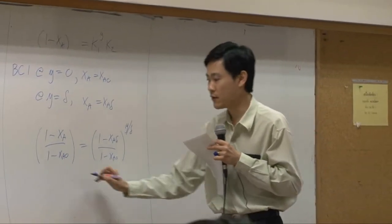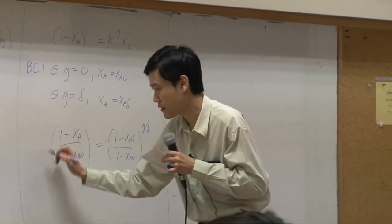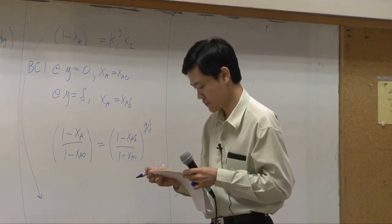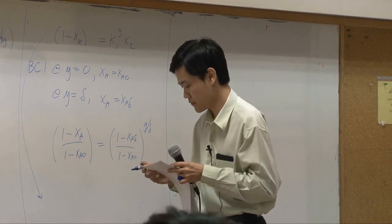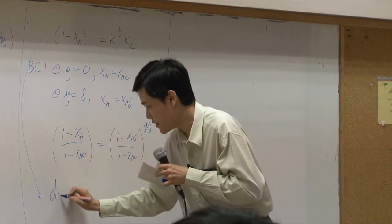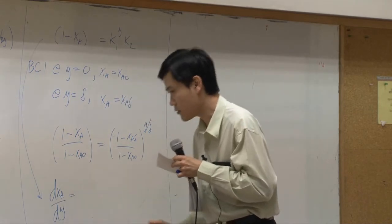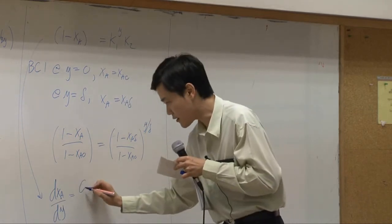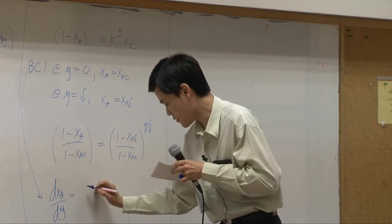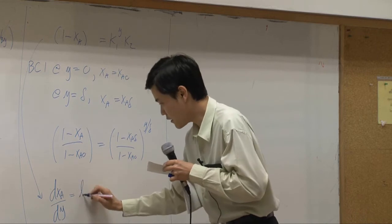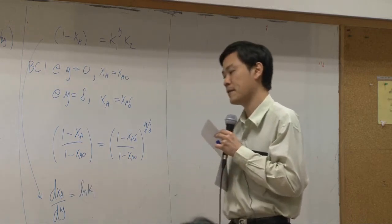Doing the way, along the way, you should get that dxa by dy supposed to be equal to a constant c1 or equal to ln of k1.